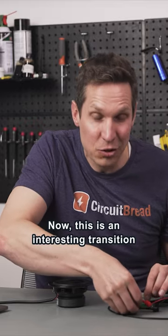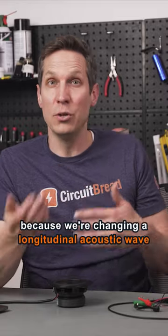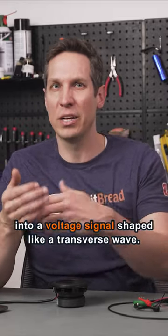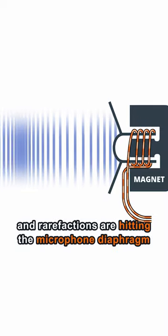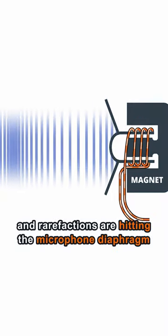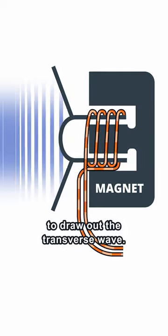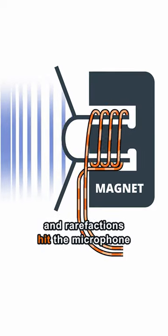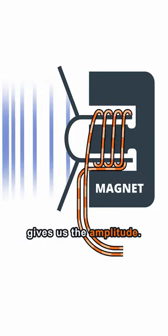Now this is an interesting transition because we're changing a longitudinal acoustic wave into a voltage signal shaped like a transverse wave. What's happening is that the compressions and rarefactions are hitting the microphone diaphragm, raising and dropping the voltage to draw out the transverse wave. The amount of times those compressions and rarefactions hit the microphone is the frequency, and how hard they hit gives us the amplitude.